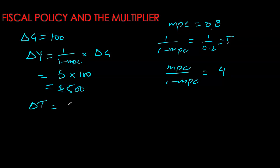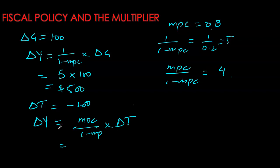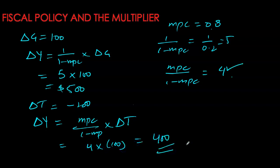A similar stimulus package but provided through a reduction in taxes — taxes reduced by $100 billion. Overall real GDP will change by MPC over (1 minus MPC) times the change in taxes. Recall that taxes always have the opposite effect on GDP, so the reduction in taxes increases real GDP by 4 times, giving us $400 billion. The impact is much bigger through government purchases, because with taxes and transfers, a part of the stimulus is absorbed by household savings and never fully enters the economy.